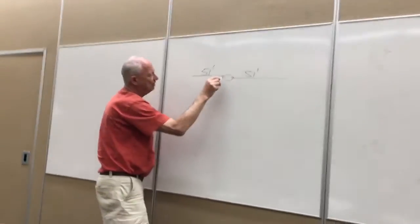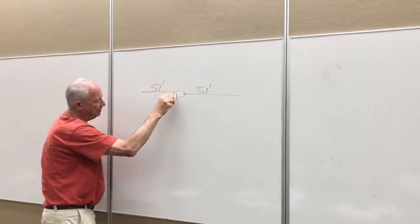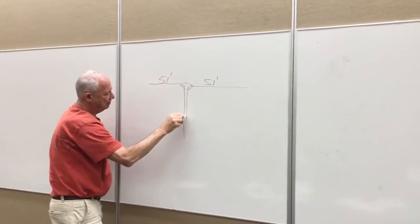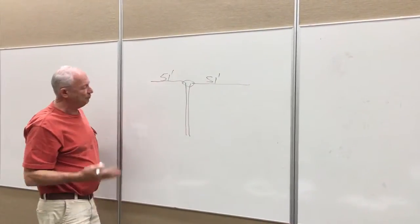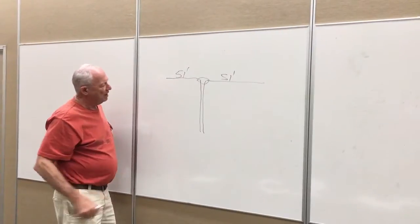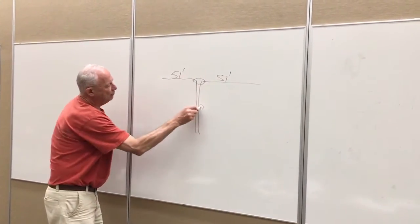We've got a center insulator here, and at this point twin lead comes down. Mine's 300 ohms. Some people use 450 ohm. And this is 31 feet.